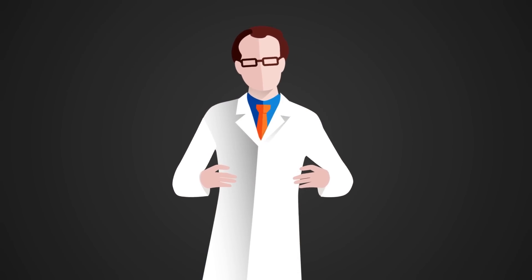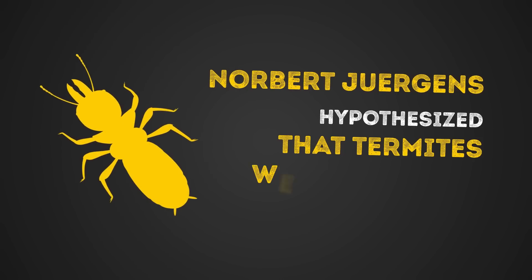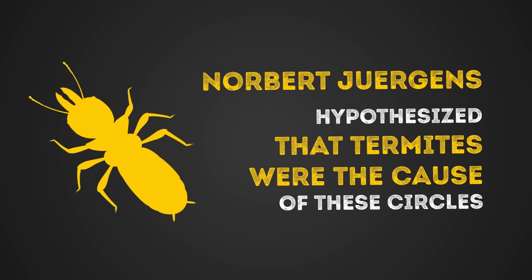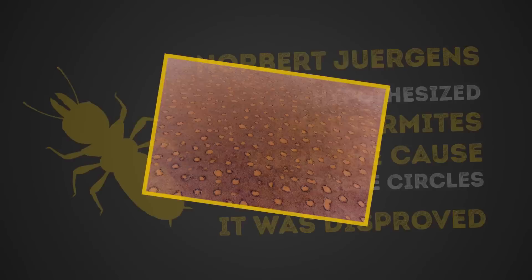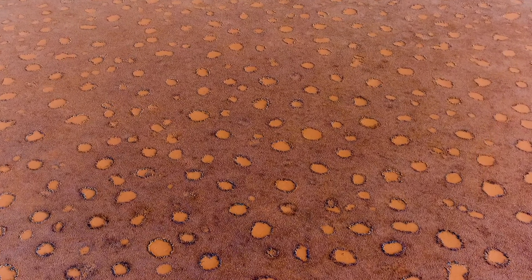In 2013, environmental scientist Norbert Juergens hypothesized that termites were the cause of these circles. But like all the hypotheses that came before his, it was later disproved. While this looks straight out of a scene from M. Night Shyamalan's hit horror flick Signs, it's definitely real, but no one can figure out why.